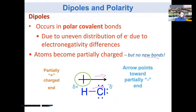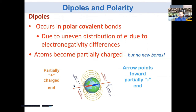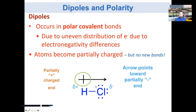We talked about the earth being essentially a dipole — whether geographic or magnetic, we have opposing regions, just like what's happening in a polar covalent bond.